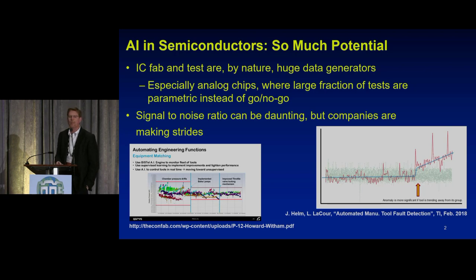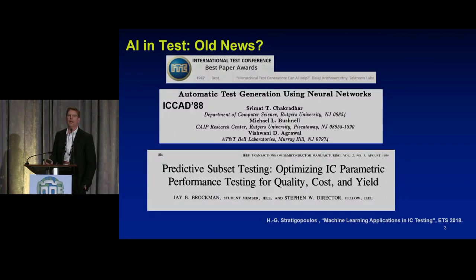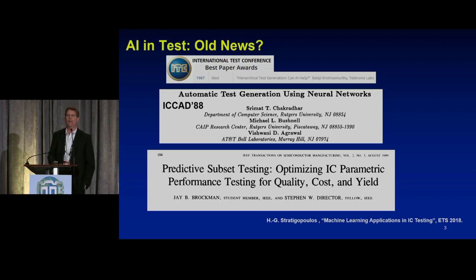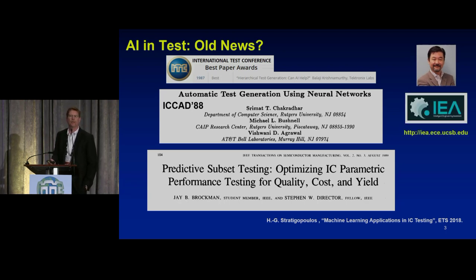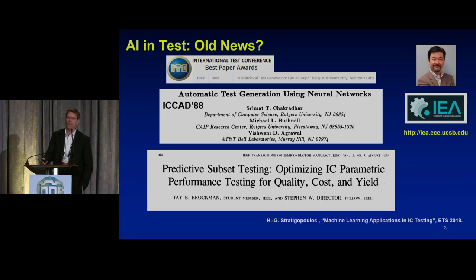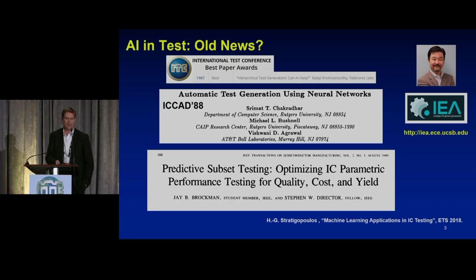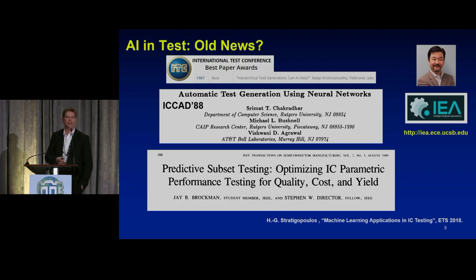Similarly at TI, we're looking at things like chamber pressure and temperature and looking for when things start to drift out of control. In an application like this the signal-to-noise ratio can be challenging because this data tends to be noisy, but you can still extract meaningful information. Is this a new thing? Not really — there's stuff published going back to the mid-80s. And just this week at the conference, we saw the general chair present IEA, which was quite impressive — using natural language processing to wade through data and generate useful information.